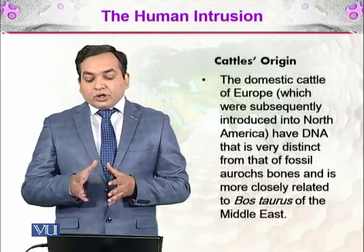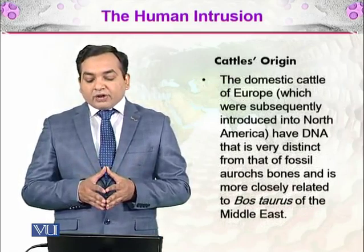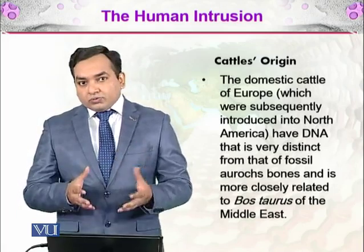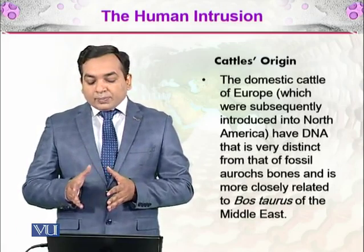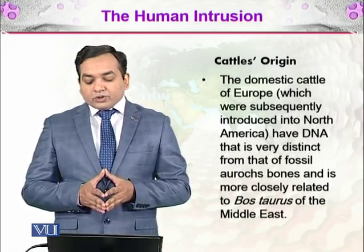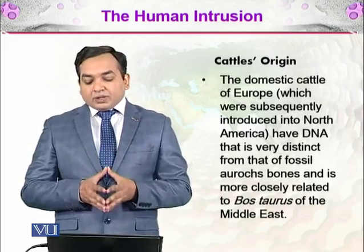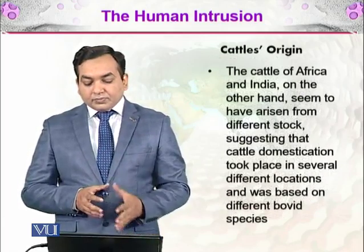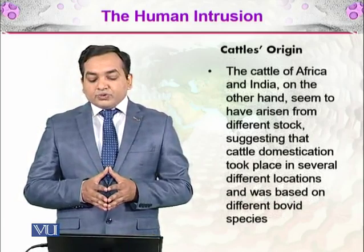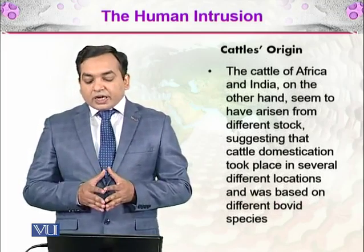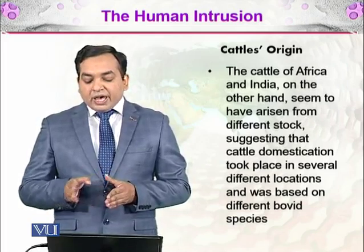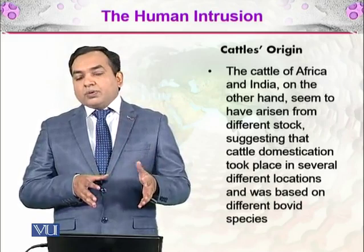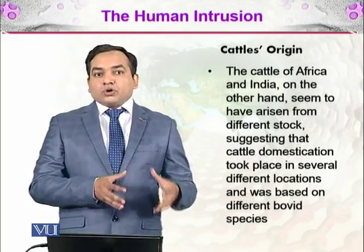Then there is cattle. The domestic cattle of Europe, which was subsequently introduced into North America, has DNA that is very distinct from the fossil auroch — the wild cattle of historical Northern Europe. Domestic cattle are more closely related to the Bos taurus of the Middle East, which was developed there and gave rise to European domestic cattle.